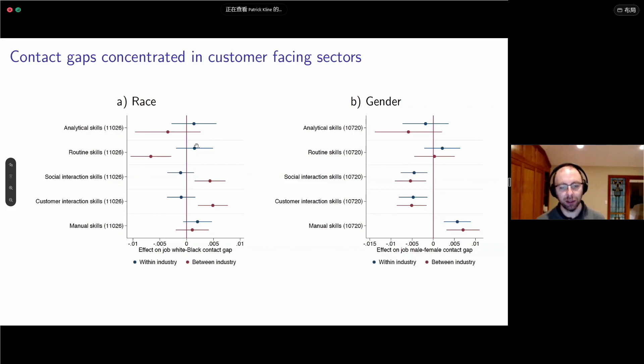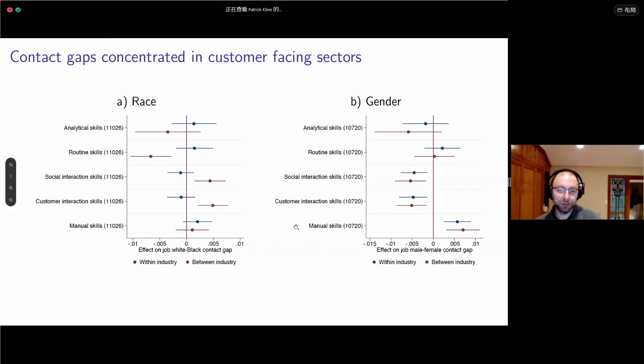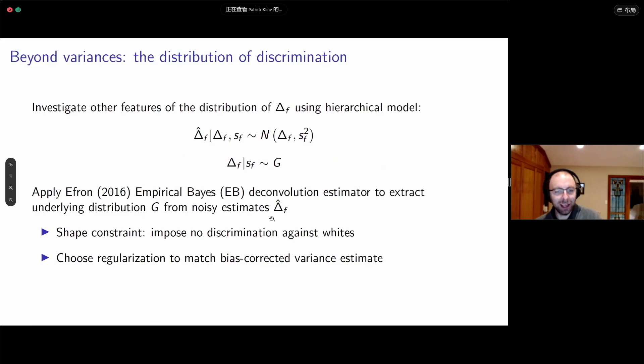We can also look at what types of jobs people are doing. Job title unconditional on firm effects is predictive. We've linked the job titles to the O*NET data and tried to code things up in terms of whether the jobs are customer-facing or not. Customer-facing jobs seem to be more biased against black names and also more biased against male names. Now we're going to go beyond variances and try to recover the entire distribution of discrimination.